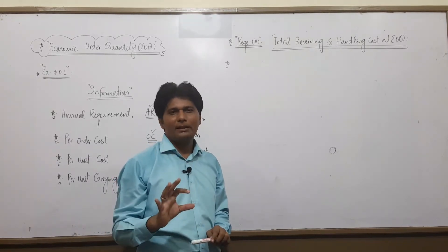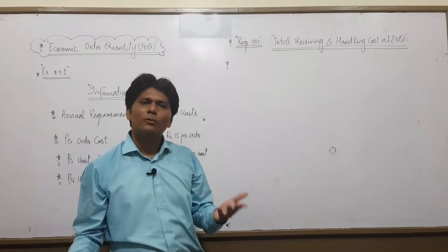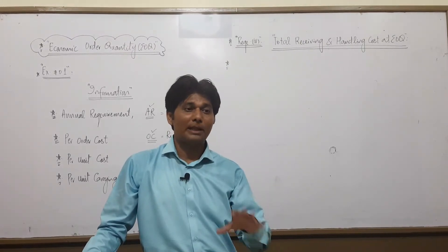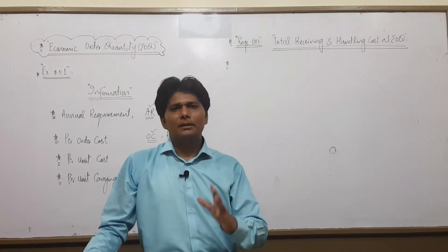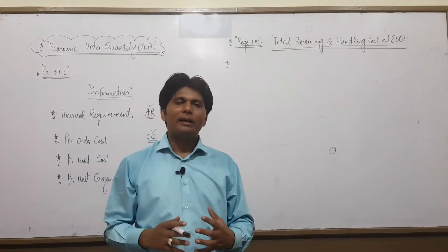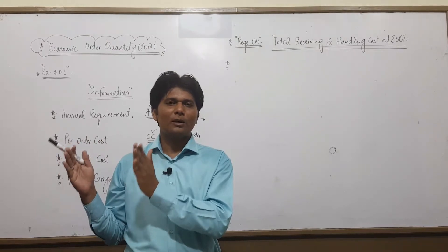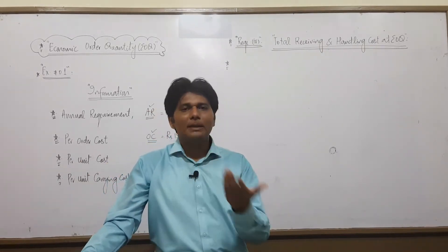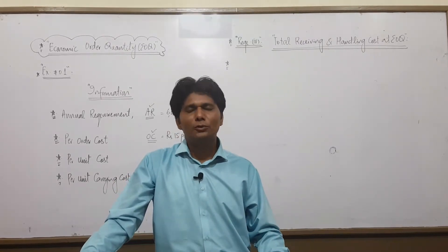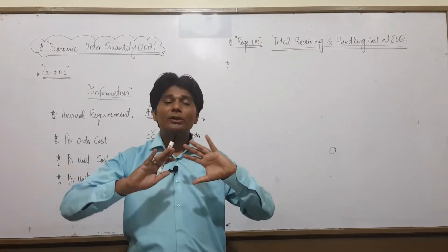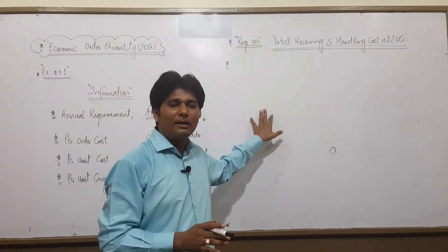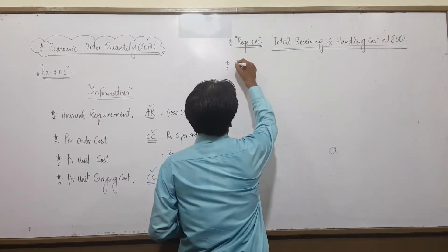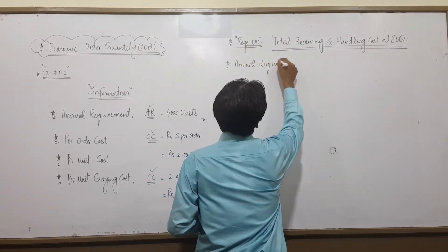Requirement 4: Total Receiving and Handling Cost at EOQ. I want you to understand this very well because the next remaining lectures on this topic involve scenarios where a company is following some order size, and you must show how much money they would save by switching to EOQ. You find EOQ, then find the cost at their current order size, then at EOQ, and prove that cost is lowest at EOQ.